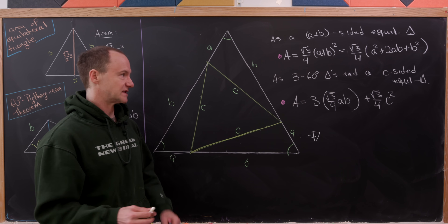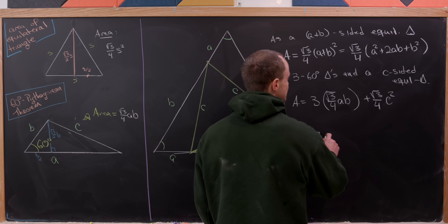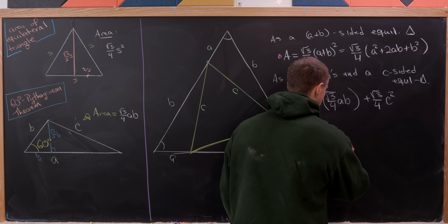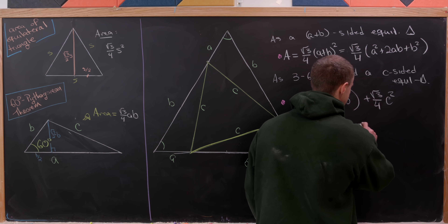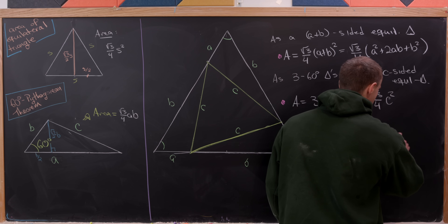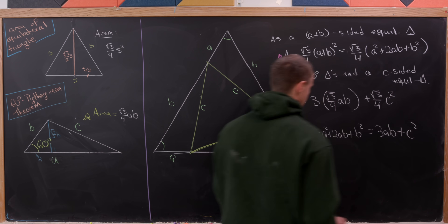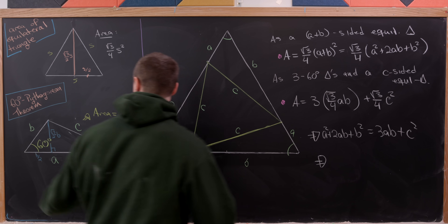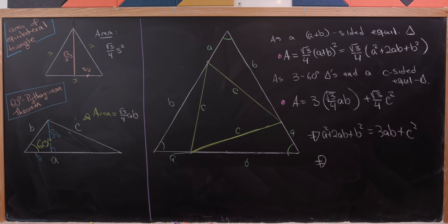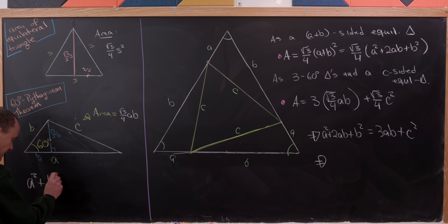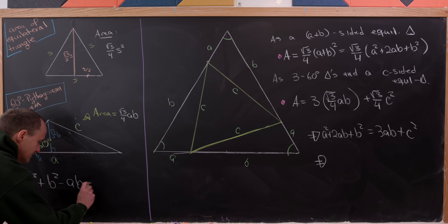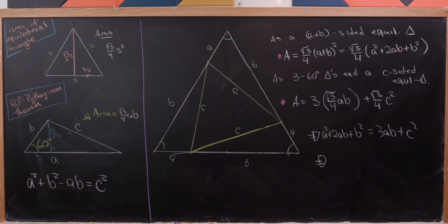Rearranging that equation gives us the 60 degree Pythagorean Theorem: A squared plus B squared minus A times B equals C squared.